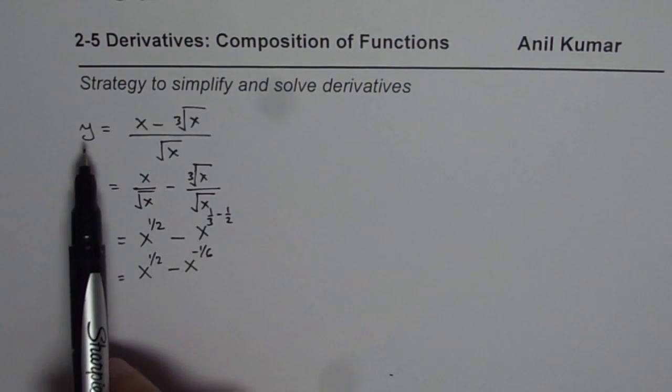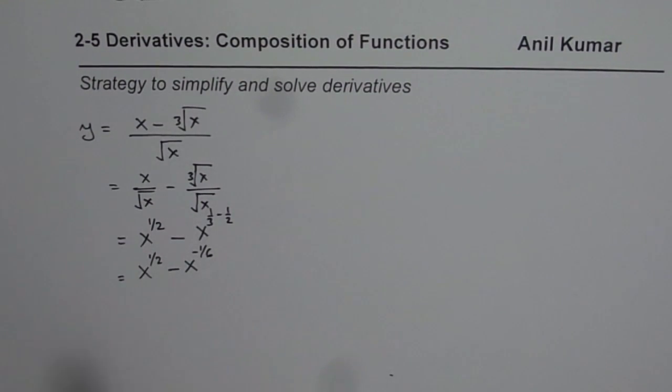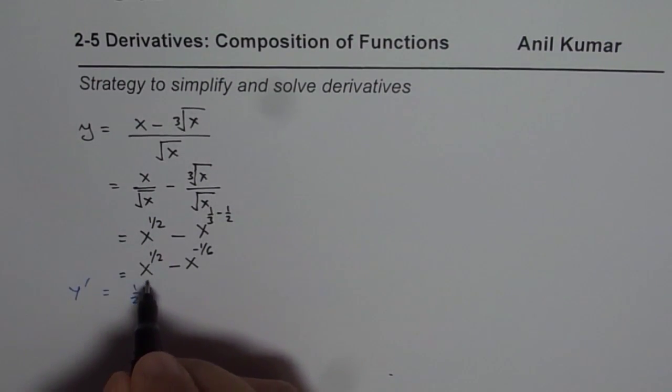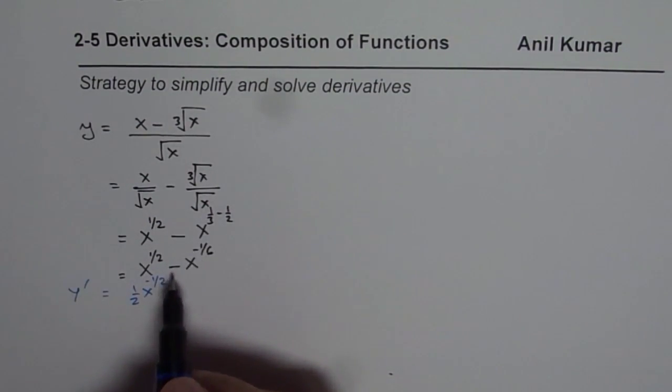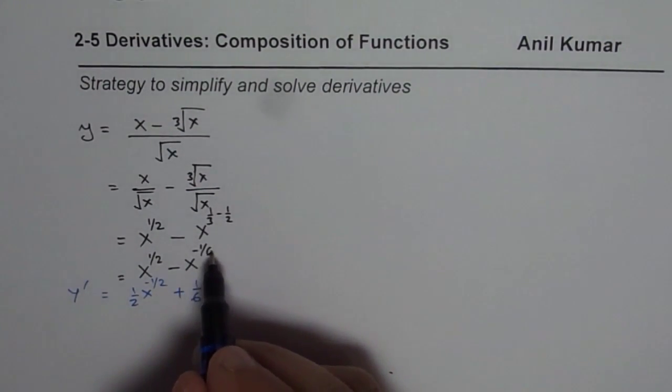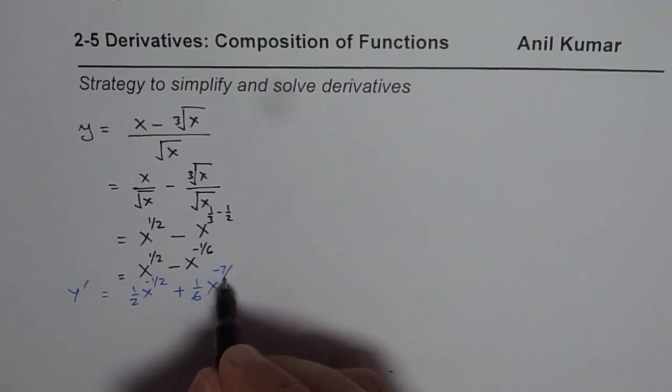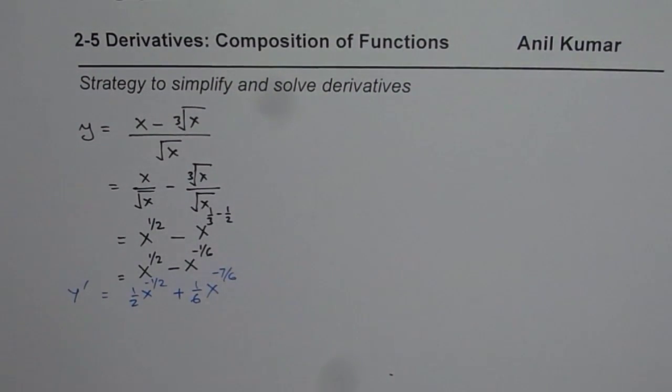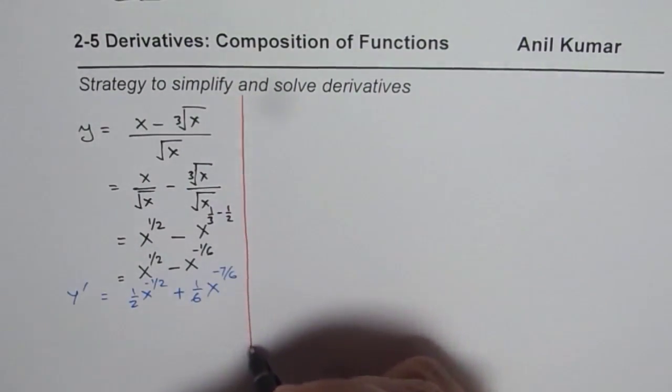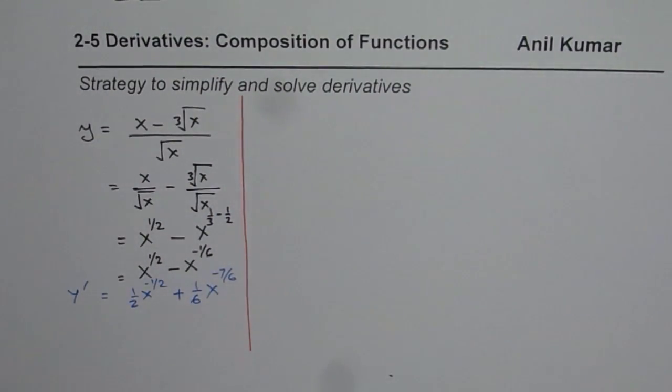But the idea is, once you write your function in this form, it is easier to write the derivative. So we could say y dash is half x to the power of minus half and in this case minus and minus becomes plus 1 over 6 x to the power of minus 1 over 6 minus 1 which is minus 7 over 6.